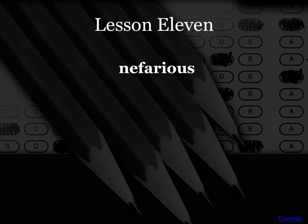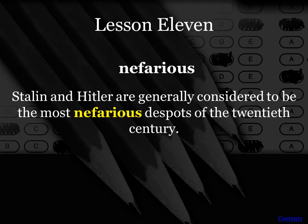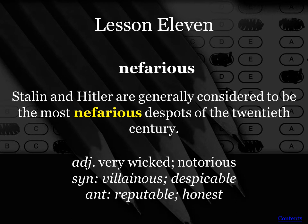Our next word is nefarious — this is an adjective. It's easy to figure out because of the example given: Stalin and Hitler are generally considered to be the most nefarious despots — remember, that's a dictator — of the 20th century. So obviously this has a negative connotation. This word means very wicked or notorious. Notorious means famous, but famous for something evil or bad. Synonyms would be villainous or despicable. The opposite would be reputable or honest.